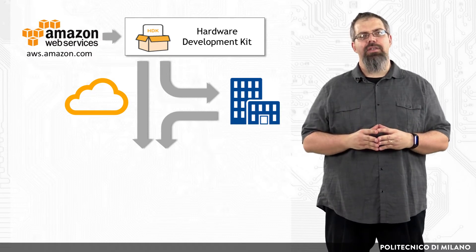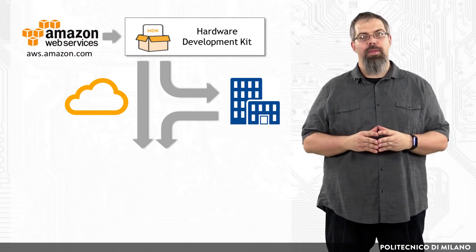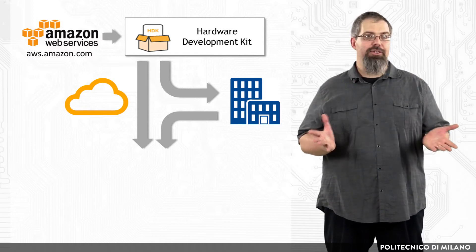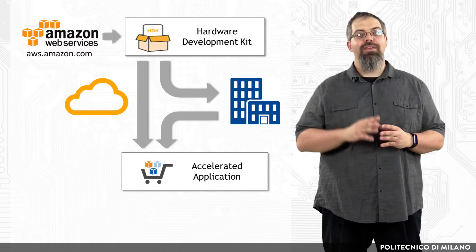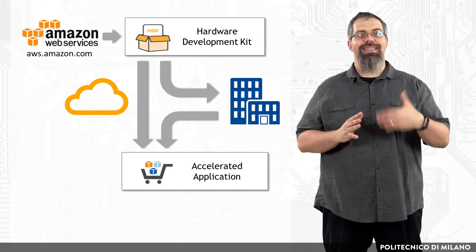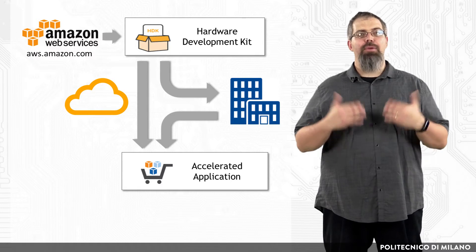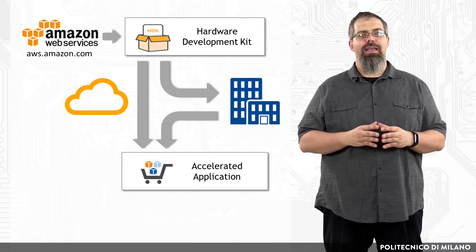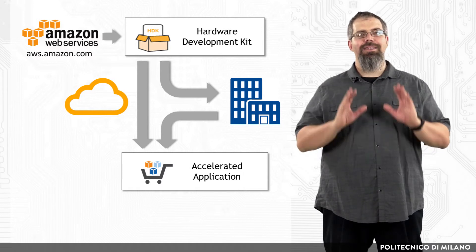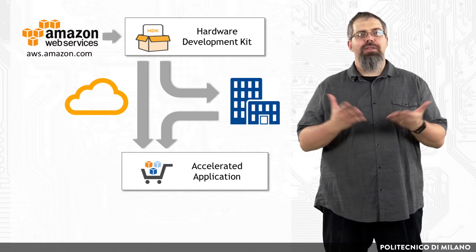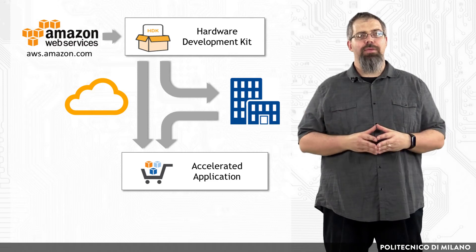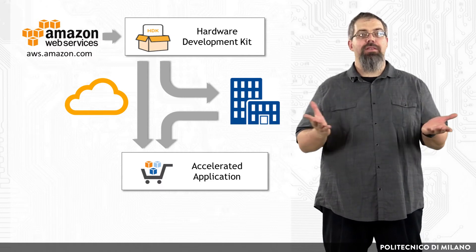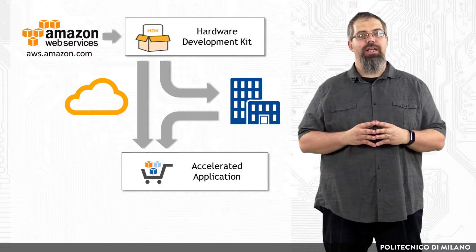The AFI creation can also take place on-premises. Obviously, by doing this, developers have to take care of all the licensing issues. Once an FPGA design is complete, it can be registered as an Amazon FPGA image and deployed to an F1 instance in just a few clicks. If you are implementing the AFI using an FPGA developer AMI, this task is very easy, because the prepackaged tool development environment comes with all the necessary scripts and tools for building and registering your Amazon FPGA image.